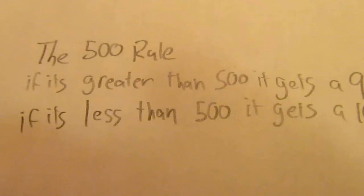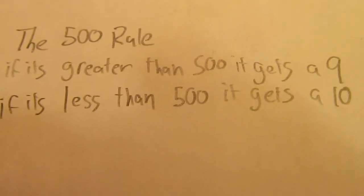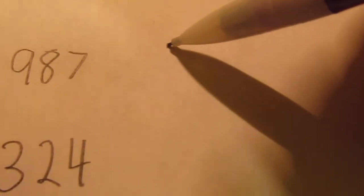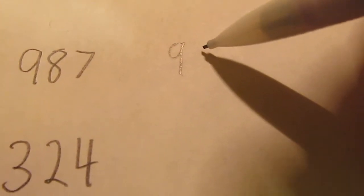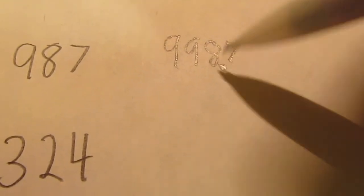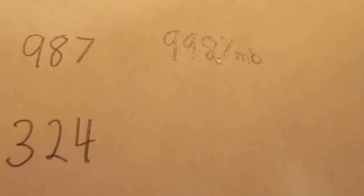If the three-digit number is greater than 500, you put a 9 on the beginning. If it's less than 500, it gets a 10 at the beginning. Here's two to practice with. The number 987, well that's greater than 500, so that's going to get a 9 at the beginning. I'm going to start by writing a 9, and then I just write 987. Put in your decimal point between the last two numbers and put in mb for millibars. So on a weather map, the number 987 means that there's 998.7 millibars.